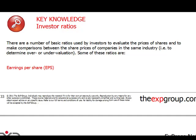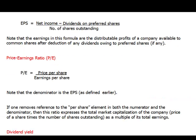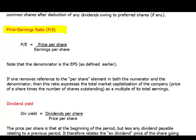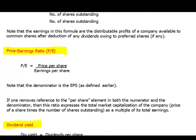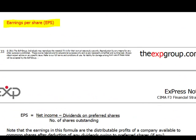Welcome to video number five within CIMA F3 Financial Strategy paper. This video will be focused around investor ratios. We will discuss three investor ratios: the first one being earnings per share, the second PE ratios (price to earnings), and the last one is dividend yield. All three ratios are extensively used by investors, and as students of F3 you should be aware of not only how they're calculated but also what they mean.